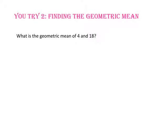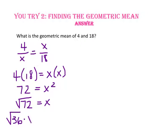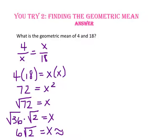Pause the video and do you try number 2. What is the geometric mean of 4 and 18? Starting with the proportion 4 to X equals X to 18, we use cross products: 4 times 18 equals X squared, so 72 equals X squared. Taking the square root of 72, we simplify to the square root of 36 times the square root of 2, giving X equals 6 radical 2, or approximately 8.5.